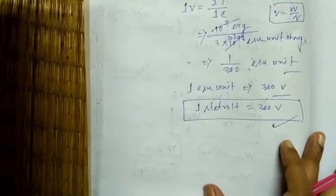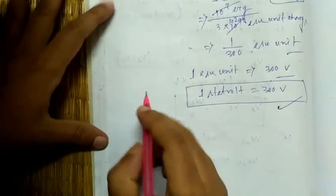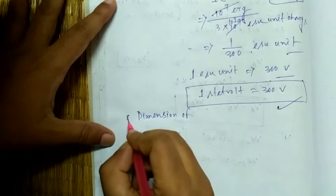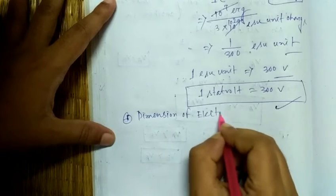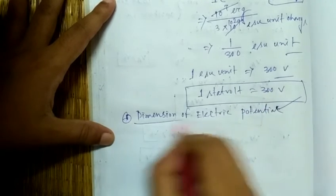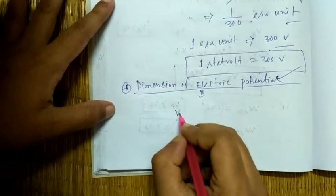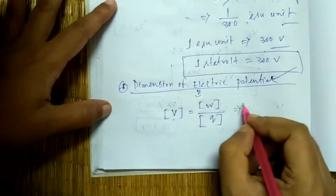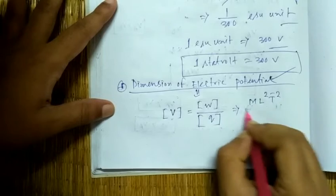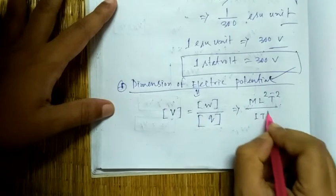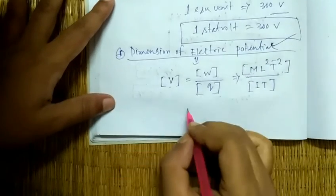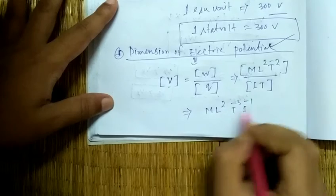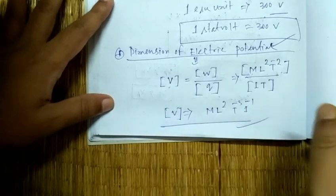Now let's discuss the dimension of electric potential. We know that V = W/Q. The dimension of work is ML²T⁻², and the dimension of charge is IT. So the dimension of electric potential is ML²T⁻³I⁻¹.